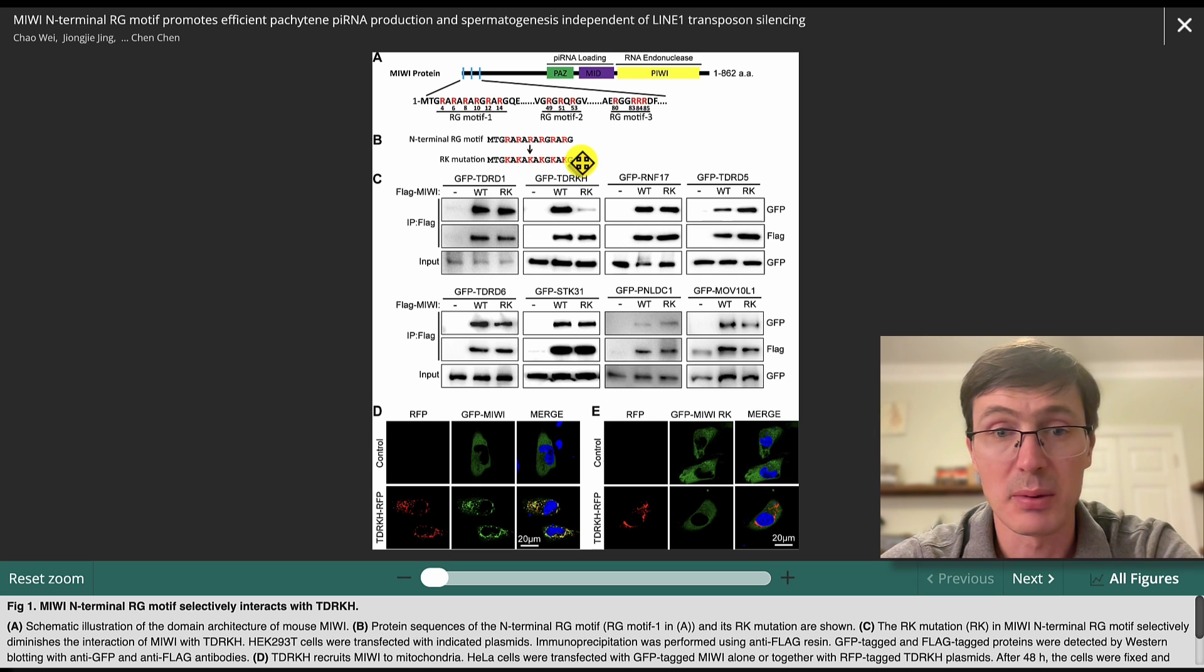Again, I think it's fine. Maybe you can say like mutated residues are indicated in red, but not more than that. So then we can move to panel C.